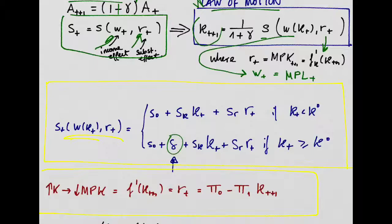They just make savings linear in capital and in the interest rate, and they specify this level of capital beyond which the economy has an exogenous savings shock, which is this delta here.